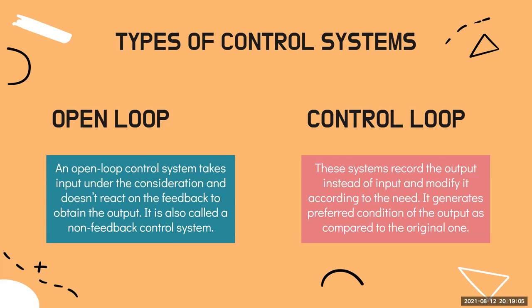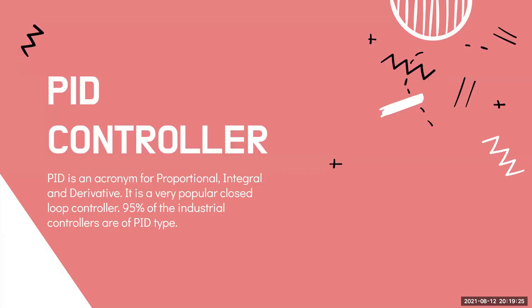In real life we use closed loop control systems because real life has many variables and very complex systems. The PID controller — which stands for Proportional, Integral, and Derivative — is one of the most popular closed loop controllers. Most closed loop control tasks are done using PID, and it is used in a wide spectrum of things from automatic and self-driving cars to quadcopters.